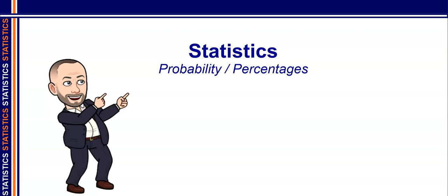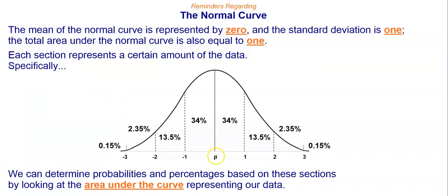Welcome back. We're going to continue our unit on statistics by looking at the normal curve and seeing how we can use it to find different probabilities and percentages of our data. Remember that the normal curve has the mean represented by zero, the standard deviation is just one, and the total area under the curve is equal to one, representing 100% of our data.